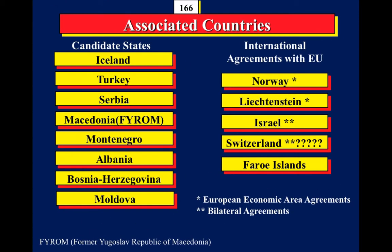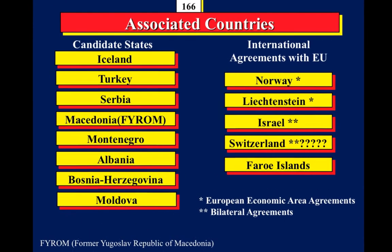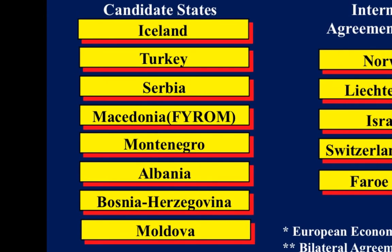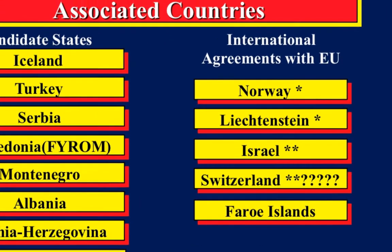Associated countries are divided into two categories. The first is candidate states — countries that are applying for EU membership. Iceland is officially a candidate state, though its negotiation has paused. Turkey applied many years ago, and Serbia, Macedonia (the former Yugoslav Republic of Macedonia), Montenegro, and Albania all participate in exactly the same way as Germany, Ireland, or France.